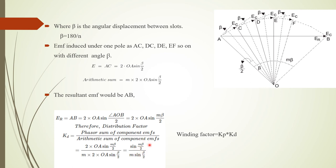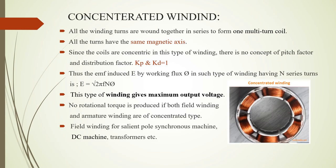The equation Kd = sin(M×beta/2) / (M × sin(beta/2)) is very important. If M equals 1, the winding is a concentrated winding. If M is greater than or equal to 2, the winding is a distributed winding. Kd is also simply the ratio of EMF induced in the distributed winding to the EMF induced in the concentrated winding.